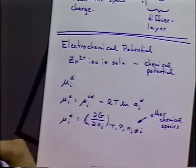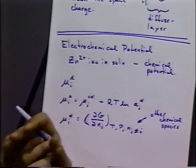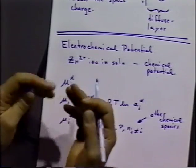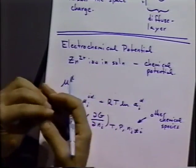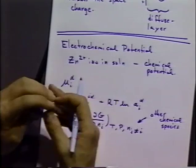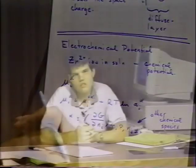Another way to think about that is that the free energy of the system is just the summation of the chemical potentials of all the species in the system.